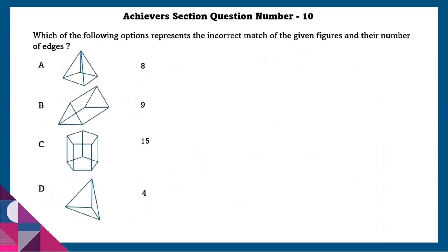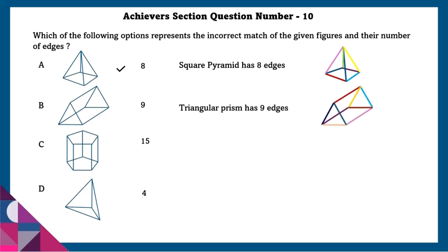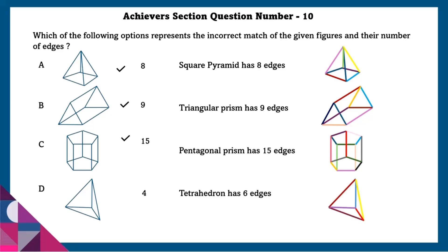Achiever section question number 10: Which option represents the incorrect match of the given figure and their number of edges? A square pyramid has 8 edges — correct. A triangular prism has 9 edges — correct. A pentagonal prism has 15 edges — correct. A tetrahedron has 6 edges, but in the options it is given as 4, so that is wrong.